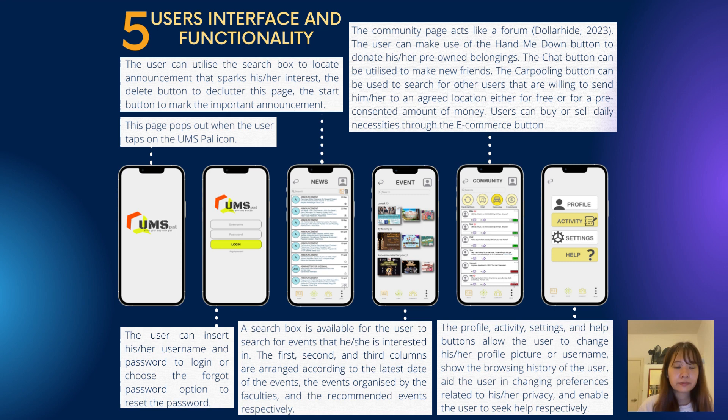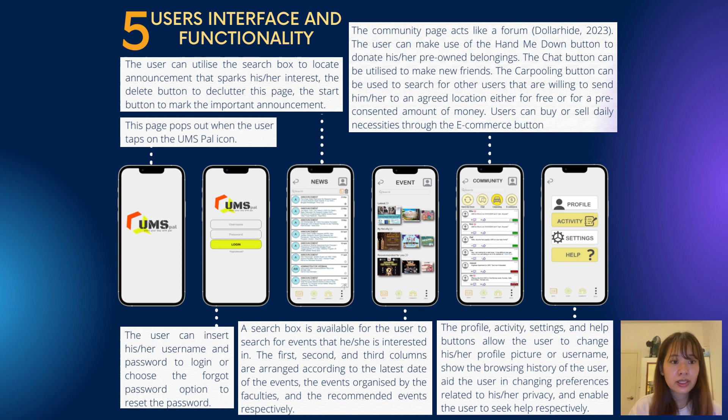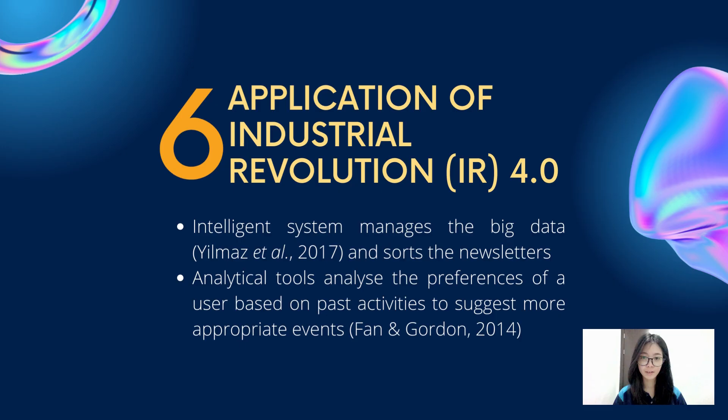The community page acts like a forum. The user can make use of the hand-me-down button to donate their previously owned belongings. The chat button can be utilized to make new friends. The carpool button can be used to search for other users that are willing to send the user to an agreed location, either for free or for a pre-consented amount of money. Users can also buy or sell daily necessities through the e-commerce button.